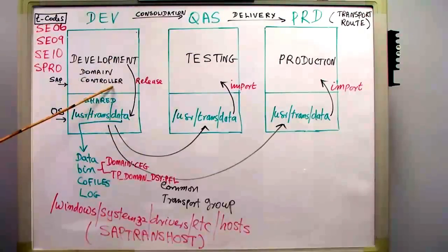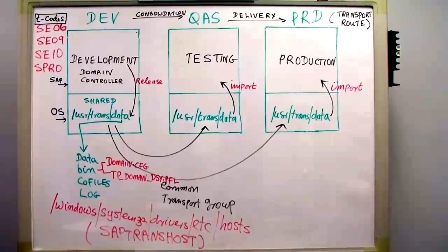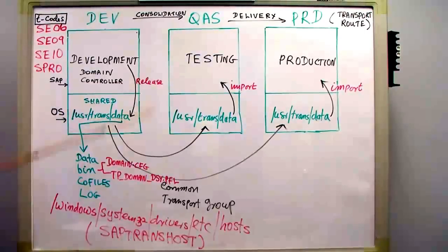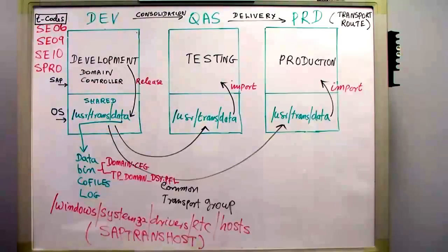When I release the transport, I specify the target system. Using a simple transport, I cannot define specific clients, but I can define the target system.